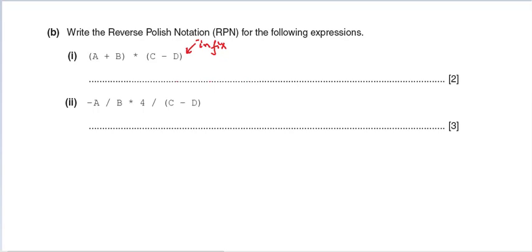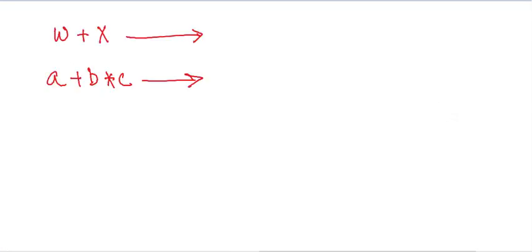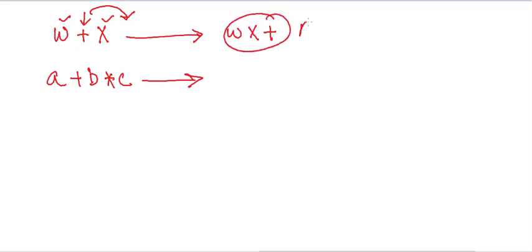We need to convert infix expressions into reverse polish notation. The rule is: if we have an operator between two variables, like W and X, that operator is moved to the right. So W plus X becomes W X plus — that is your solution in RPN.